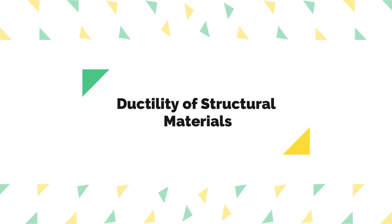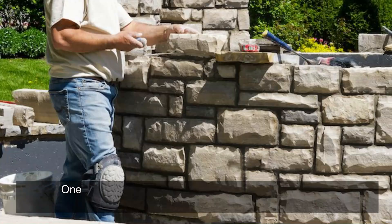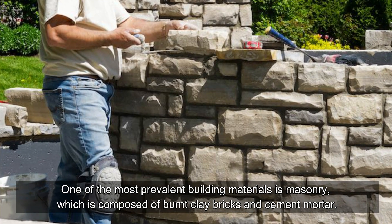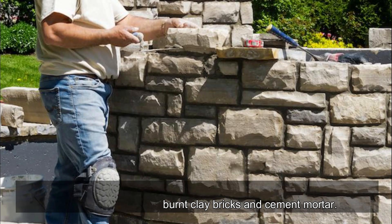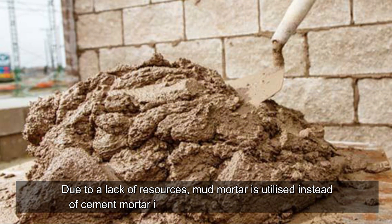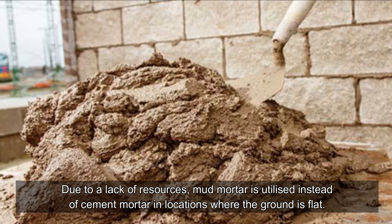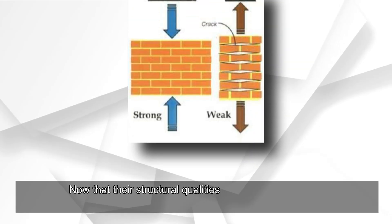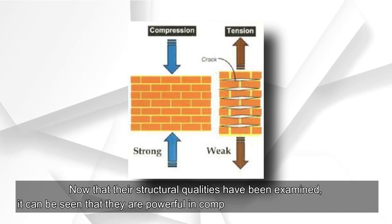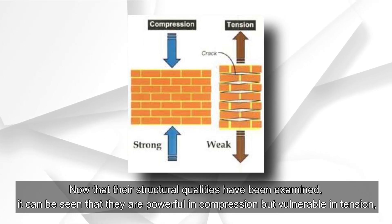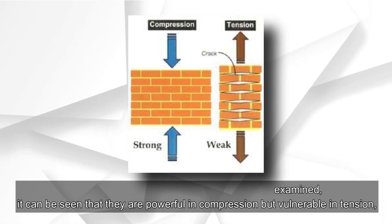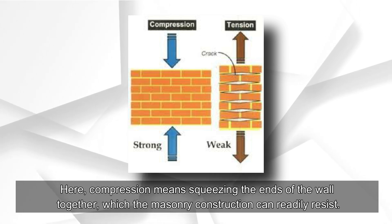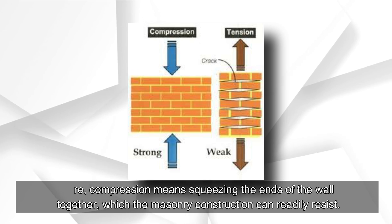One of the most prevalent building materials is masonry, which is composed of burnt clay bricks and cement mortar. Due to a lack of resources, mud mortar is utilized instead of cement mortar in locations where the ground is flat. Examining their structural qualities, it can be seen that they are powerful in compression but vulnerable in tension. Compression means squeezing the ends of the wall together, which masonry construction can readily resist.